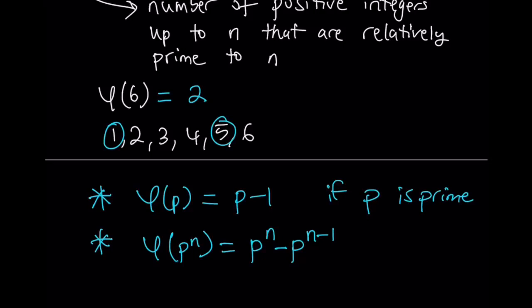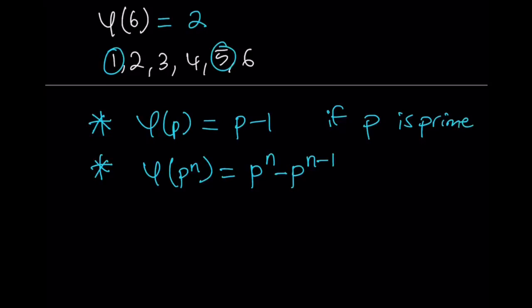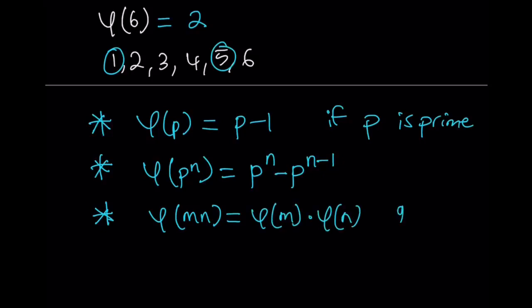The totient function is a very interesting function in number theory because it's multiplicative, just like d(n) or sigma(n). What it means for a function to be multiplicative is: if you have two numbers m and n that are relatively prime, then phi of m times n equals phi of m multiplied by phi of n. Of course, their GCD must equal 1.